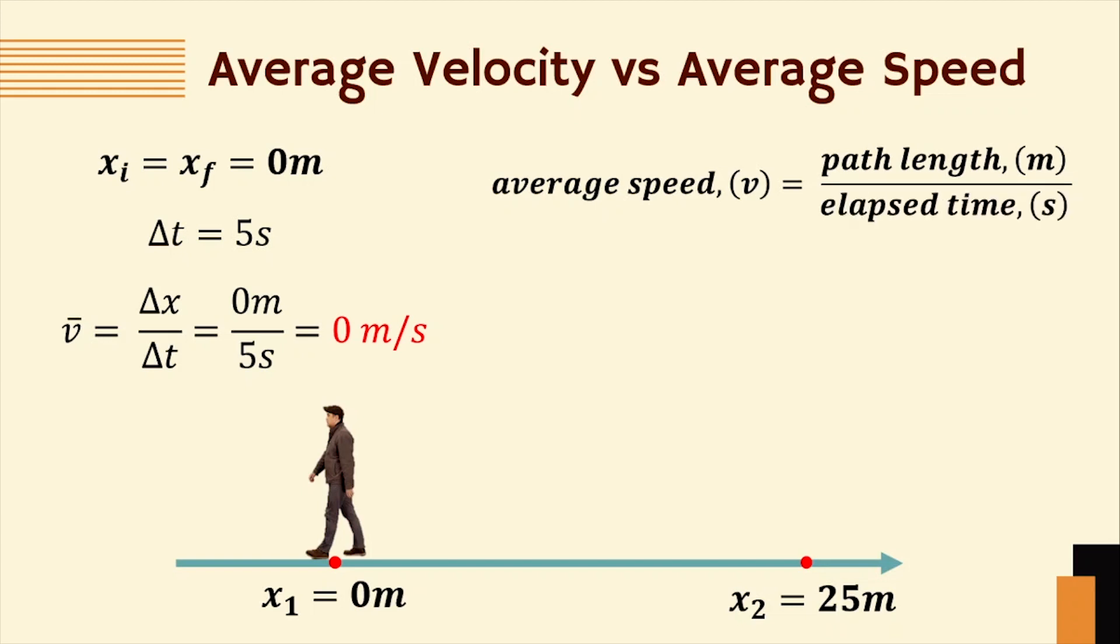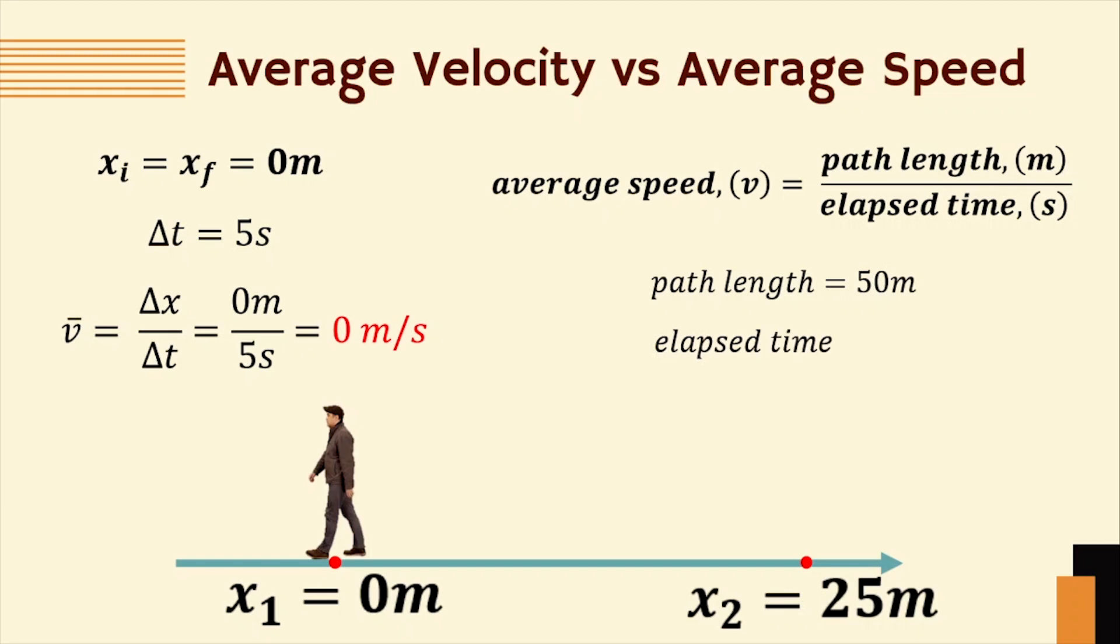The path length here is the distance you traveled from this point up to this point and going back to your starting position. That means your path length is twice 25 meters or 50 meters. The elapsed time is 5 seconds. Dividing 50 meters by 5 seconds, we get 10 meters per second.